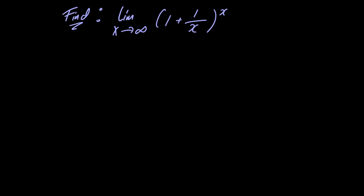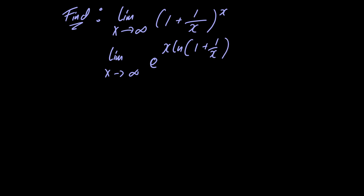In this video we're going to figure out what the limit is as x approaches infinity of 1 plus 1 over x, all raised to the power x. Let's begin by rewriting the limit as the limit as x approaches infinity of e raised to x multiplied by the natural logarithm of 1 plus 1 over x. These two are the same — you would use properties of the natural logarithm to bring the x up, and then these two cancel, leaving what you have on top.